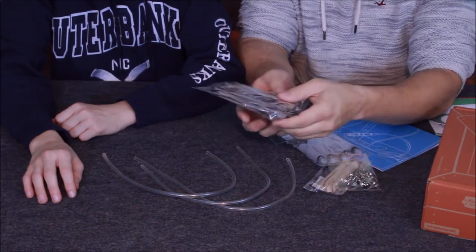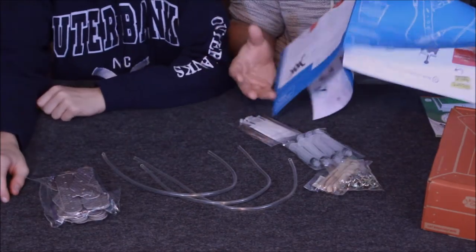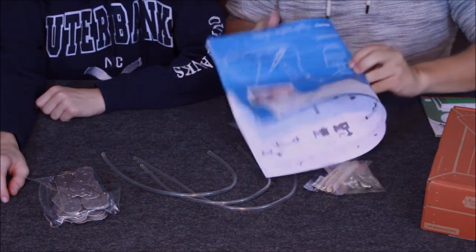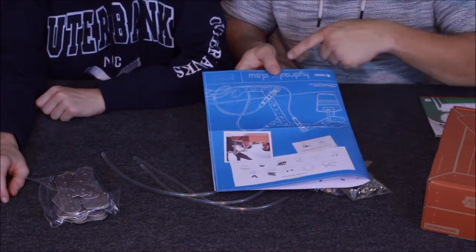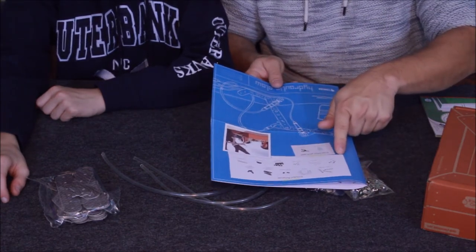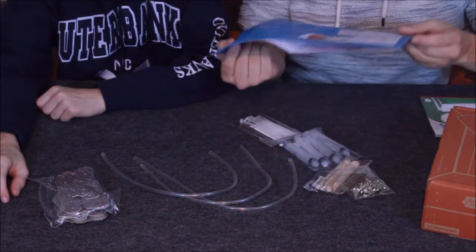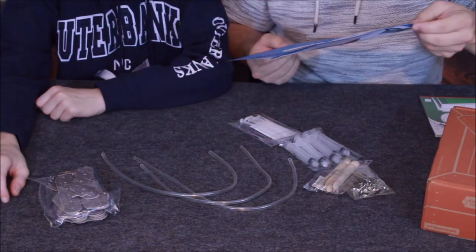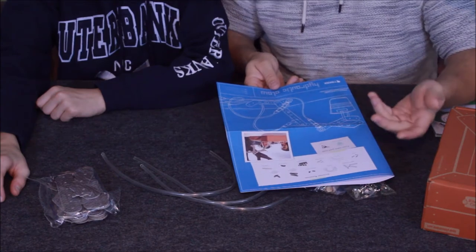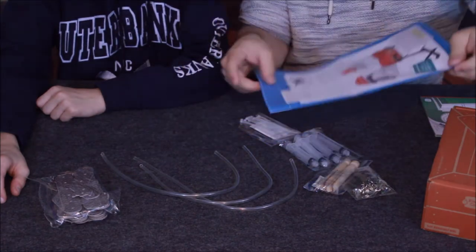Then of course we've got the overall blueprint. Here on the outside you can see what it's supposed to look like as it's built, or a general idea of it, as well as all of the components that are inside the box. It also says that you're going to need a pair of scissors and a glass of water. Since we're using hydraulics, water is what we're going to use to do the hydraulics with.